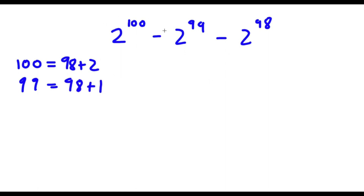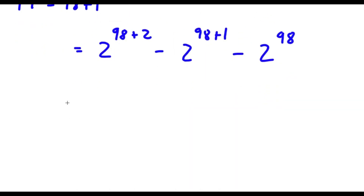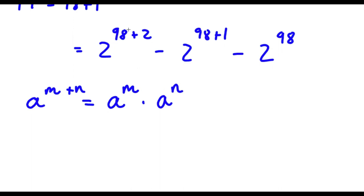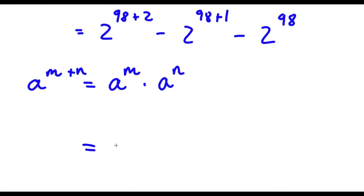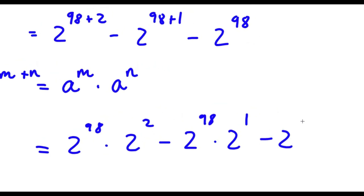Now if I have something in the form a to the power of m plus n, this is equal to a to the power of m times a to the power of n. So 2 to the power of 98 plus 2 equals 2 to the power of 98 times 2 to the power of 2, minus 2 to the power of 98 plus 1 equals 2 to the power of 98 times 2 to the power of 1, and 2 to the power of 98 we leave as is.